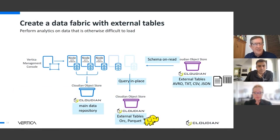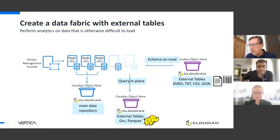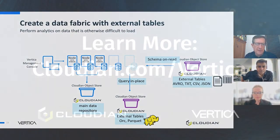Finally, there's sort of a data fabric approach here as well. I can set up a main repository with Cloudian for my data warehouse. I can use Cloudian to store external tables like ORC, Parquet, and Avro, and I can access that as part of my analytics. I can also use schema-on-read, so if I have text and CSV files, I can very easily read those into the node and store those in Cloudian. There's almost like a data fabric that starts to appear when you use Vertica and Cloudian together — a centralization of where the data is stored and how you analyze that data.